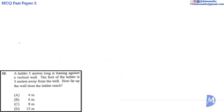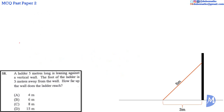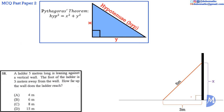Question 58. A ladder 5 meters long has its foot 3 meters away from the wall. How far up the wall does this ladder reach? We are asked to determine this distance — I will denote it as X. The vertical wall meets at 90 degrees with the horizontal ground, so we are considering the three sides of a right-angled triangle. By Pythagoras' theorem, the hypotenuse squared is equal to the sum of the squares of the other two sides. So we have 5² = 3² + X².